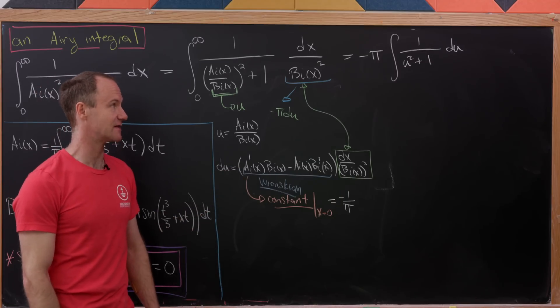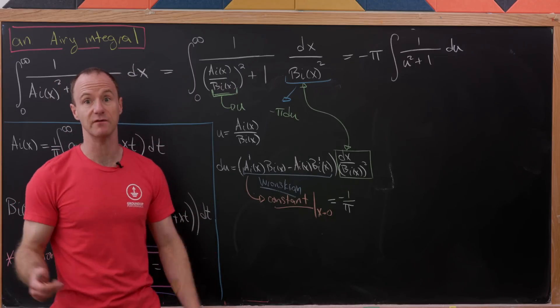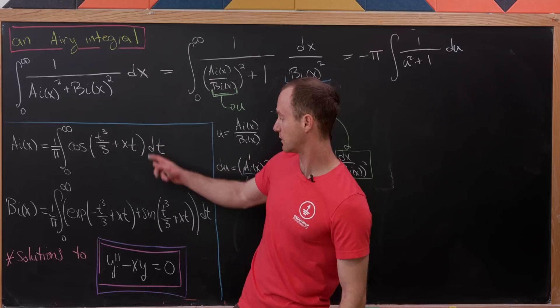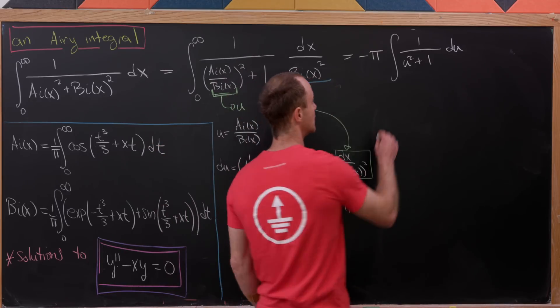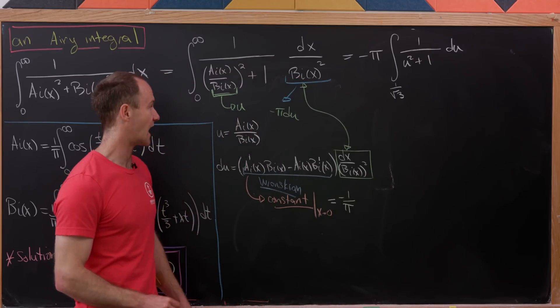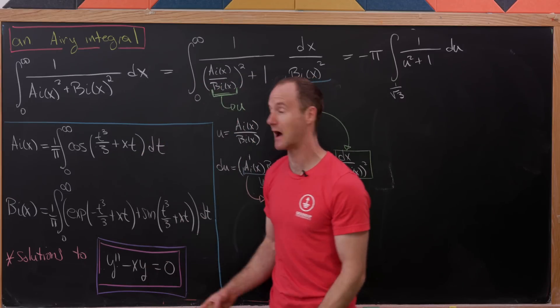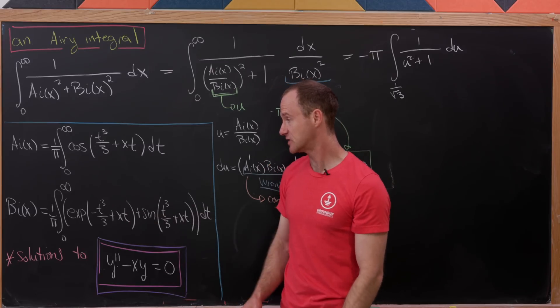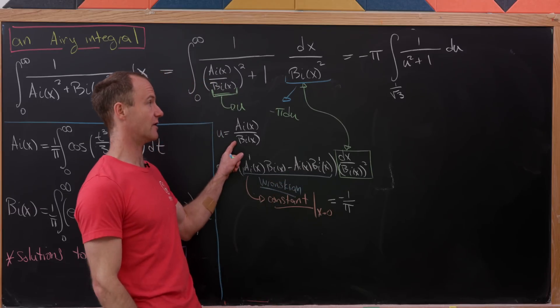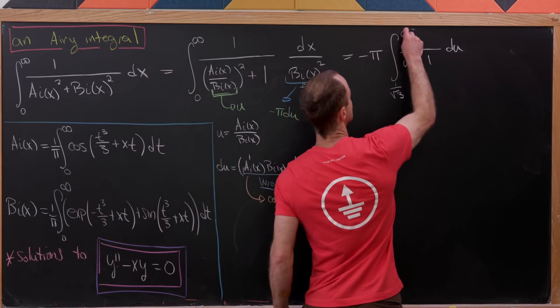But also notice we haven't said anything about the bounds of integration. But finding the bounds of integration are very similar to finding this constant. They would be videos in their own right, given that these integrals would be really tricky. So I'll just say that the lower bound of integration, when we plug in x equals 0 and take this quotient, will be 1 over the square root of 3. And we can kind of talk our way through the higher bound of integration. As x goes to infinity, notice that cosine is bound by negative 1 and 1, whereas this exponential term grows without bound. But since this exponential term is in the denominator of u, that motivates us to guess that the limit there would be 0.